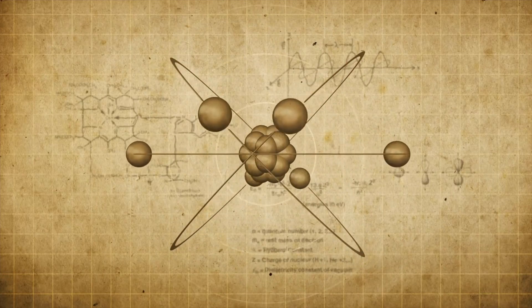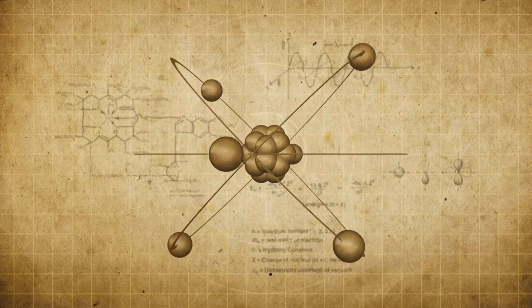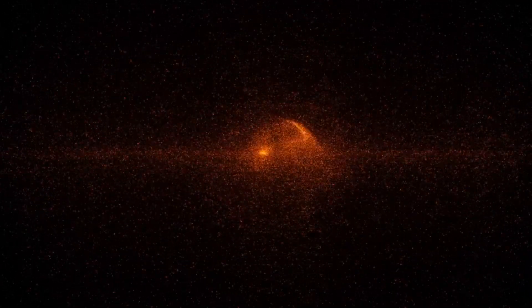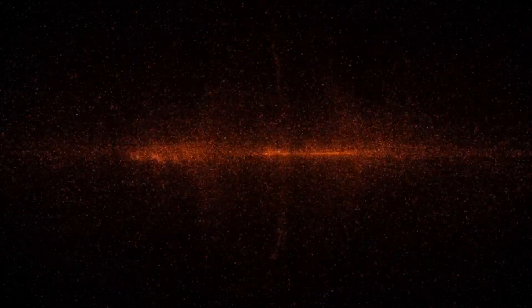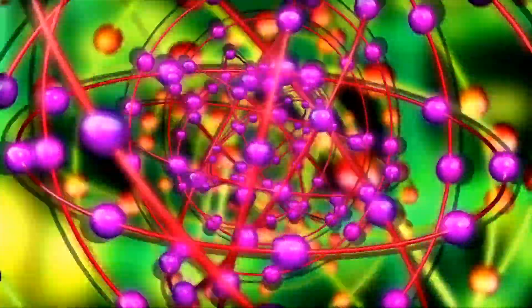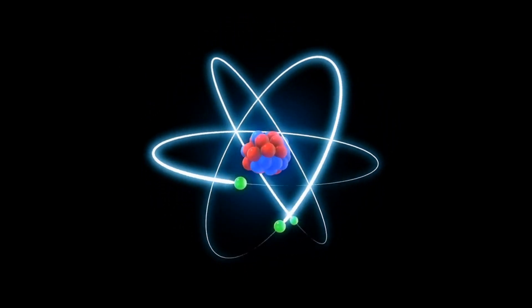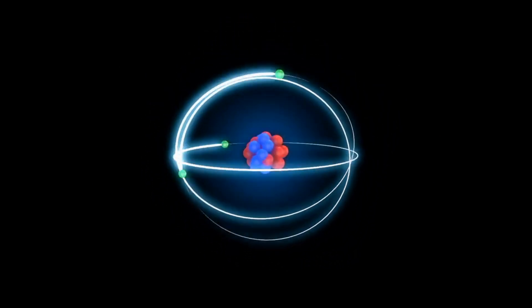Now, muons are quite similar to electrons, but they have a much greater mass. In fact, muons have a mass that is about 207 times greater than that of an electron. This makes muons one of the heaviest elementary particles that we know of. You can think of muons as the larger version of electrons because they are so similar.